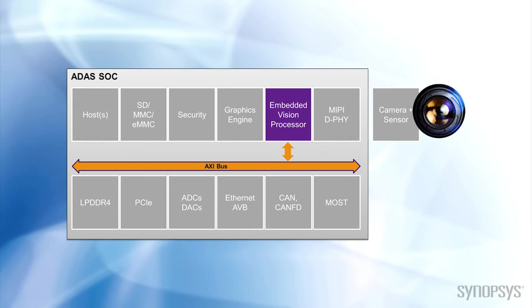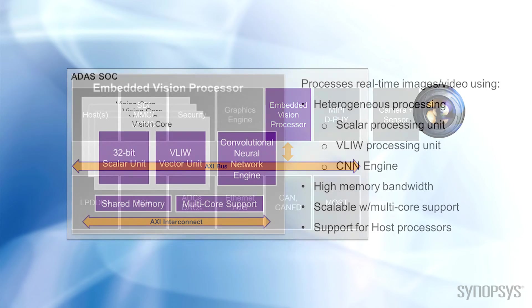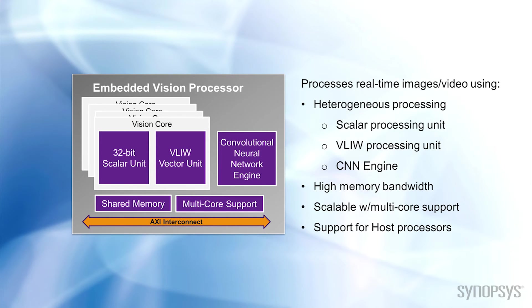Since an embedded vision processor is often part of a larger system, using a standard interface like an AXI bus is important for talking to external components such as external memory, a host processor, or other interfaces.